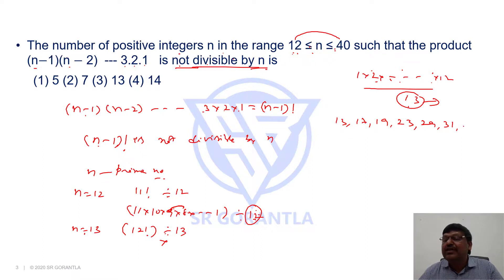29, 31, and 37. 1, 2, 3, 4, 5, 6, 7 prime numbers are there. So when n is equal to any of these prime numbers, (n-1) factorial is not divisible by n. Hence, my answer is 7.